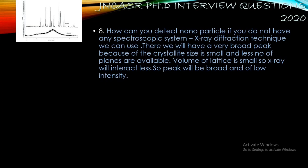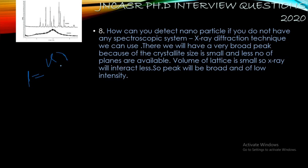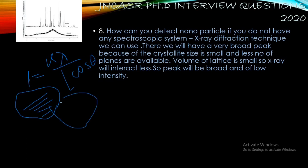The next question was: how can you detect nanoparticles if you do not have any spectroscopic system? The answer is by using X-ray diffraction (XRD) — you will have a very broad peak because the crystallite size is small for nanoparticles, fewer planes are available, and the volume of the lattice is small, so X-rays interact less. If you know the Scherrer formula where β = Kλ/(L cosθ), where L is the crystallite size.